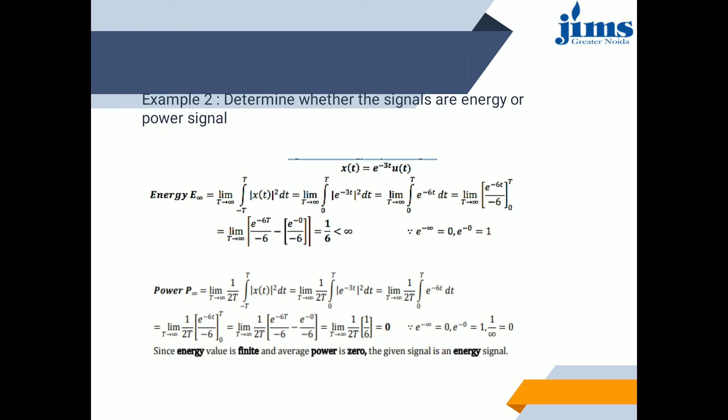Next: determine whether the signals are energy or power signals. x(t) = e^(-3t) · u(t). First, we discuss what energy and power signals are. In electrical systems, signals may represent voltage or current. Consider a voltage signal v(t) across a resistance R producing current i(t). The instantaneous power is p(t) = v(t)·i(t) = v²(t)/R, or in terms of current, i²(t)·R.